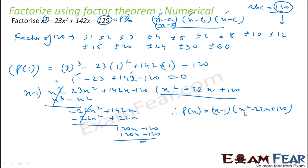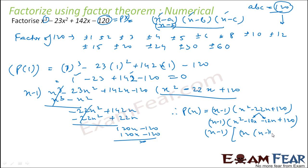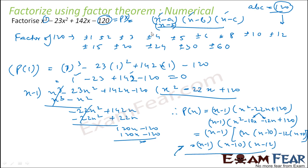That means p(x) is nothing but (x minus 1) into (x square minus 22x plus 120). Now we factorize the quadratic using the split middle term method. Split minus 22 so the product is 120: that gives minus 10x and minus 12x, since minus 10 into minus 12 is 120. This gives x(x minus 10) minus 12(x minus 12), so the final factorization is (x minus 1)(x minus 10)(x minus 12). That is the answer. Since it was degree 3, I first found the factor using factor theorem, reduced it to a quadratic, then used the split method.